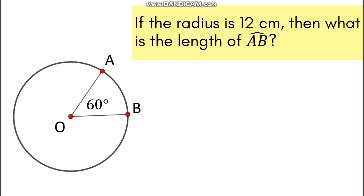Let's take a look at this example. So let's say we have circle O. If the radius is 12 cm, then what is the length of arc AB? The one that is missing here is the length of arc AB. We have the radius, which is segment AO and segment BO, and we know that this is 12 cm.